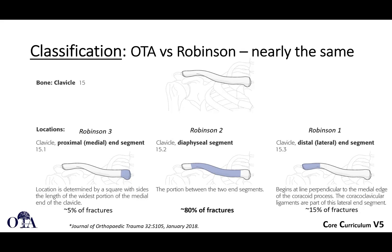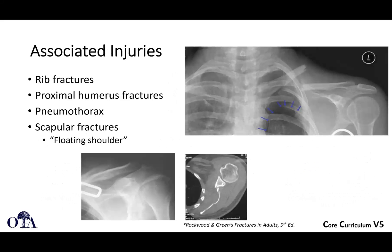For classification, AO/OTA and the Robinson classification are fairly similar. You have a medial fracture, a diaphyseal or mid-shaft fracture, and a distal fracture. For distal fractures, an important consideration is whether the fracture is lateral to the coracoclavicular ligaments or not, which can make a difference in treatment.